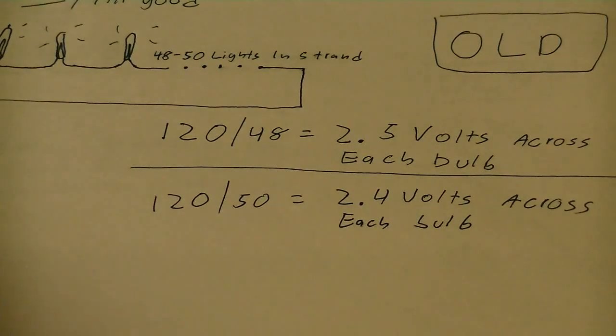Now to keep things simple, what most companies do is they'll put 50 bulbs in there just to make it an even number. That'd make it 2.4 volts across each bulb, which is slightly less voltage, but it's not enough for the human eye to notice the difference in the light. You couldn't tell no difference in brightness.